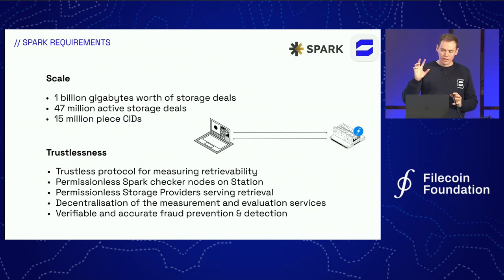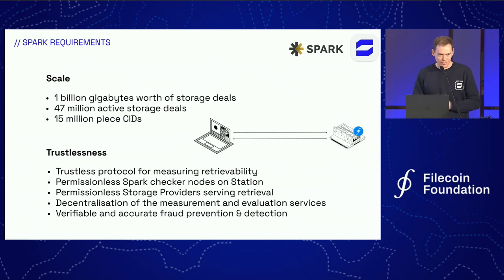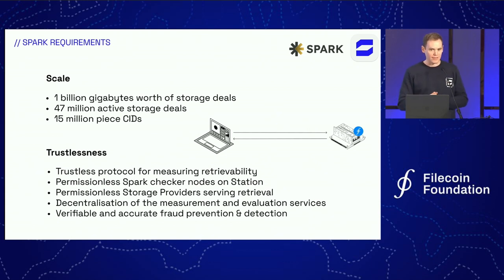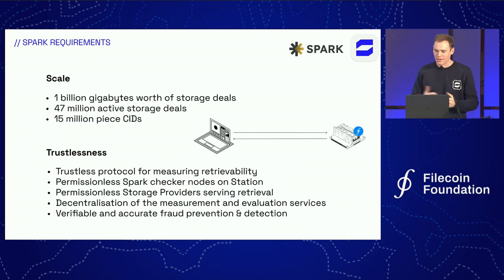Looking at the scale we have here for Spark requirements, there's a subset which is the LDN Fill Plus program datasets — the ones which allow people to get that QAP, quality adjusted power, of 10x. So Spark is specifically going to focus on that dataset. Will Scott is going to speak next about these different tiers or SLAs for different sets of data, because some data people want to store and never retrieve, whereas other people want their data retrievable very quickly so they can propagate it into L2 networks like Saturn.